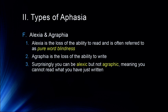Alexia is the loss of the ability to read, often referred to as pure word blindness — affecting people who previously had the ability to read and lose it, generally considered a visual recognition disorder. Agraphia is the loss of the ability to write. Surprisingly, you can be alexic but not agraphic, meaning you can write but you can't read what you have just written. This shows these are distinct neural pathways involved in reading and writing — we often treat them as two sides of the same coin, but they are actually entirely different neural systems.